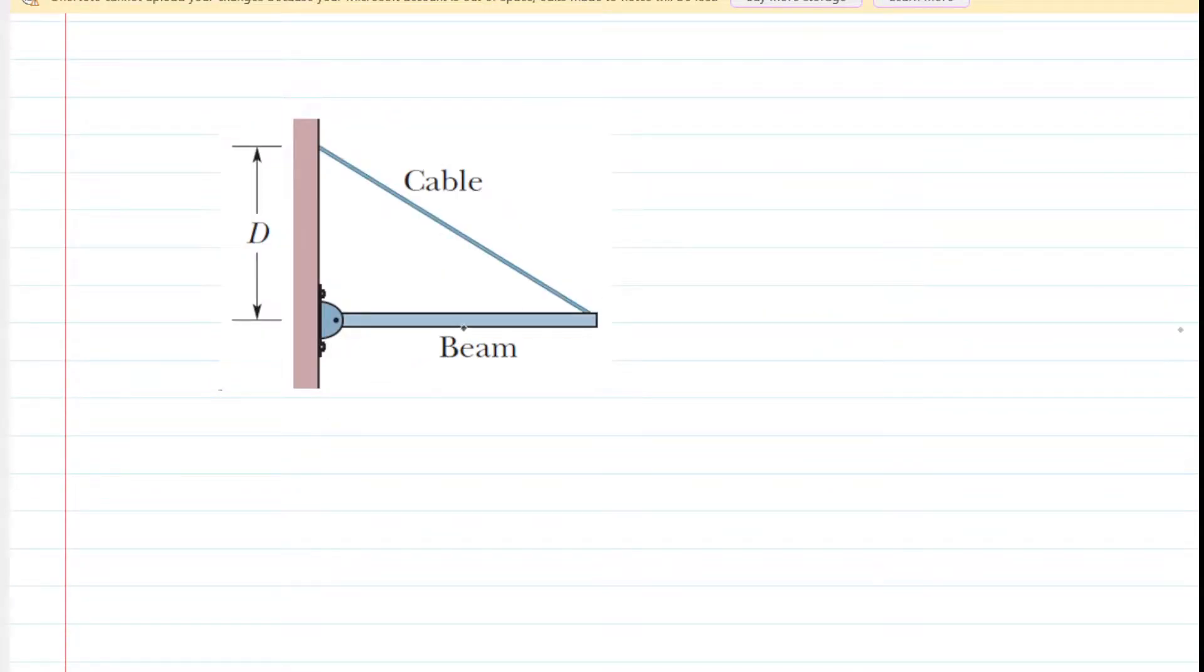The first force that we can draw acting on the beam would be the weight, and since this is a uniform beam, that means the weight would be acting at the geometric center of the beam. So we will direct a force downward. We will label that W, and the question gives us the weight as equaling 500 Newtons.